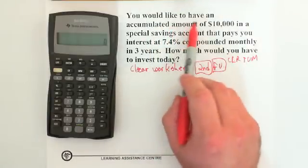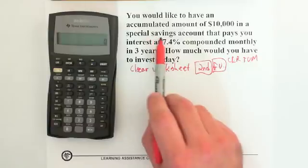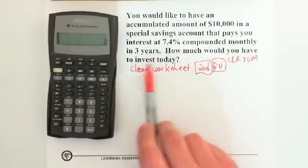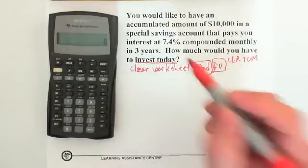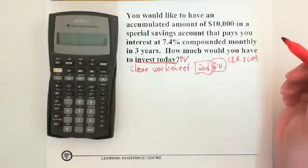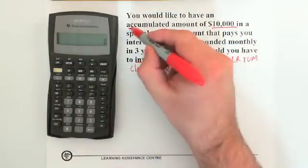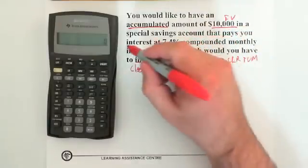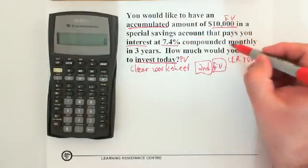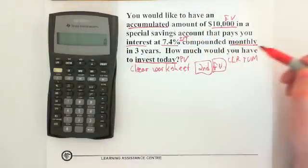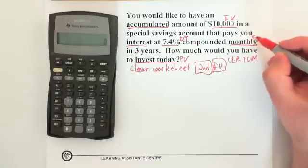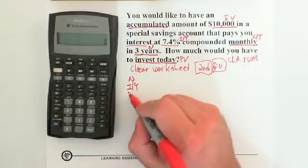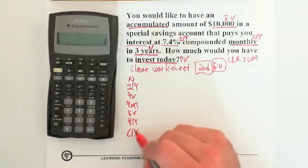Second question: you would like to have an accumulated amount of $10,000 in a special savings account that pays 7.4% compounded monthly. In three years, how much would you have to invest today? The question asks how much to invest today — that's the present value. The $10,000 is what we want to accumulate, so that's the future value. The 7.4% is our IY, monthly is our CY, and three years is our N.